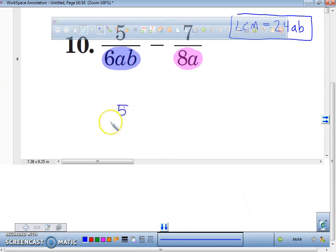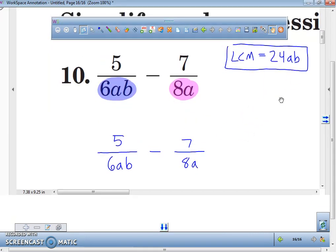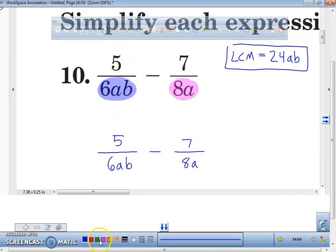I'm going to rewrite this. I've got 5 over 6AB minus 7 over 8A. Our denominator is going to be 24AB. Because right now, I cannot subtract these because they do not have the same denominator. I've got to multiply this fraction by the same number. What number would I have to multiply 6 by to get to 24? 4.